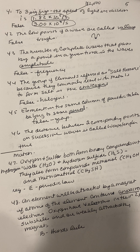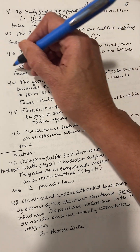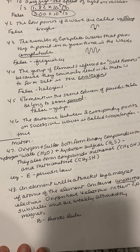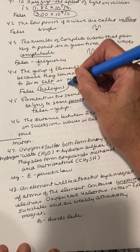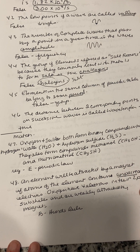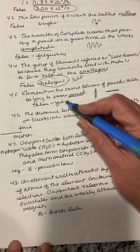Number forty-three: the number of complete waves that pass by a point in a given time is the amplitude — false. The number that pass by is the frequency. Number forty-four: the group of elements referred to as salt formers are the calogens — false, they're called halogens. Number forty-five: elements in the same column of a periodic table belong to the same period — false, columns are groups and periods go across.